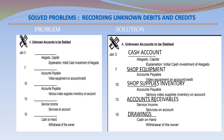Solution A – Unknown Accounts to be Debited. January 3 – Cash Account Debit, Ajegado Capital Credit – Initial investment of Ajegado. January 7 – Shop Equipment Debit, Accounts Payable Credit – Video equipment purchased on account.